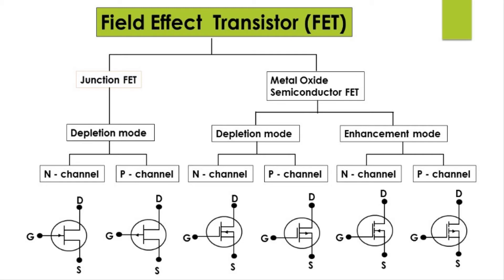Similar to BJT, FET also has three terminals: source, gate, and drain. Now there are two subtypes in field effect transistor. The first one is Junction Field Effect Transistor, commonly known as JFET, and the next one is Metal Oxide Semiconductor Field Effect Transistor, or simply MOSFET.